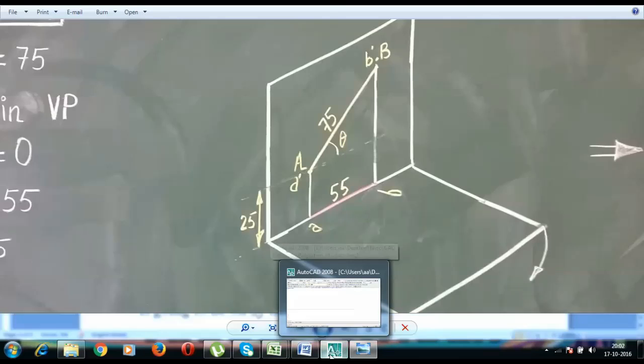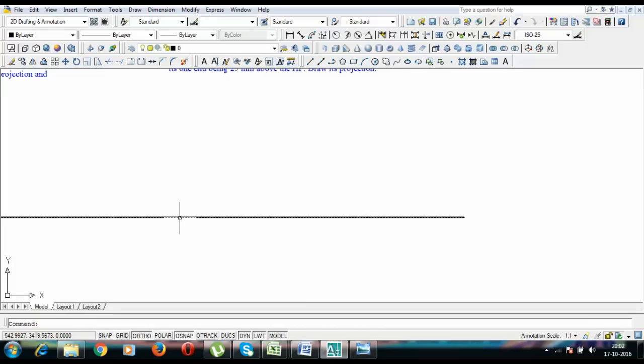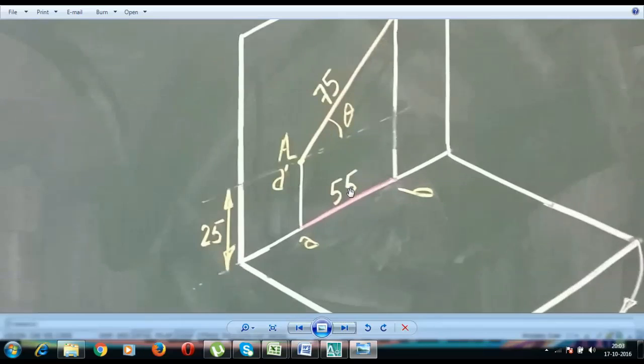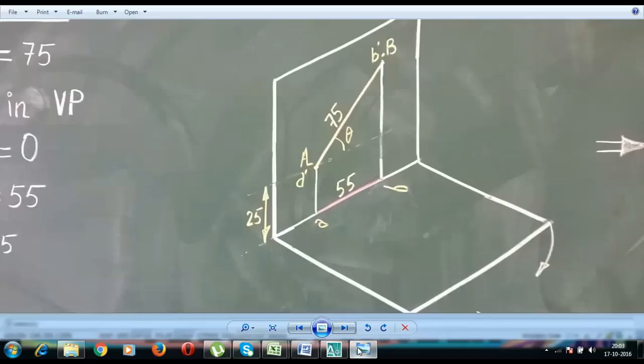Let us head straight to AutoCAD and I'm going to show you what could be done. So we have this line over here, this endpoint A, 25mm above, and this is going to be A dash. This over here is what you call point A. You can clearly see that this top view length entirely lies on this XY line. This is 55 millimeters.